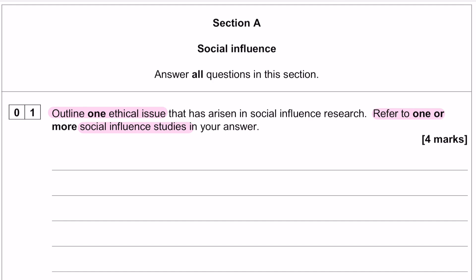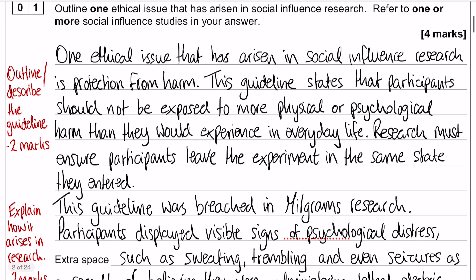It's not just identify the ethical issue — it's actually outline or describe what that ethical issue means. So let's jump over and look at the model answer. I have gone for protection from harm. That first paragraph is all about what protection from harm actually is. The guideline states that participants should not be exposed to more physical or psychological harm than they would have experienced in everyday life, and research must ensure that participants leave the experiment in the same state as they entered.